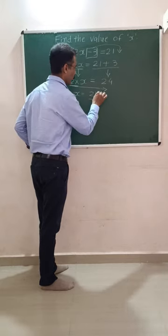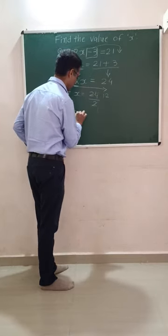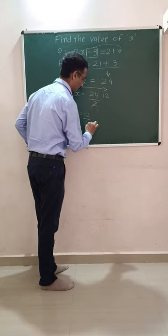2 times 12 is equal to 24. So x is equal to 12 over 1. Therefore, x is equal to 12.